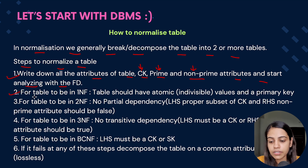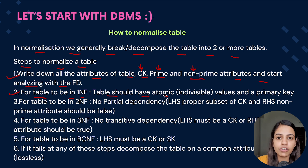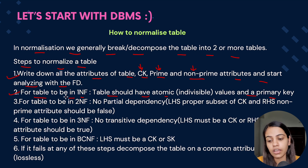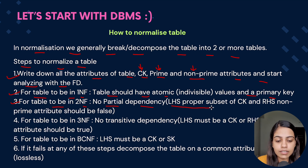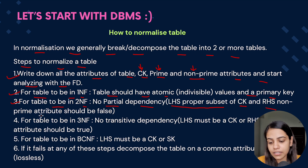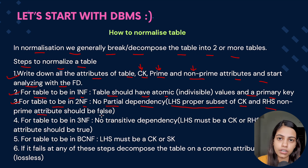The second step: for the table to be in first normal form, the table should have atomic (indivisible or single) values and have a primary key. For the table to be in second normal form, there shouldn't be any partial dependency. Partial dependency occurs when the LHS is a proper subset of the candidate key and the RHS is a non-prime attribute — this condition should be false for 2NF.